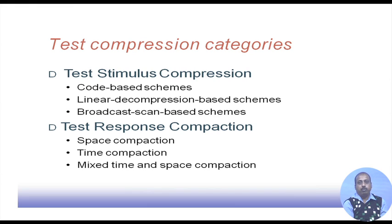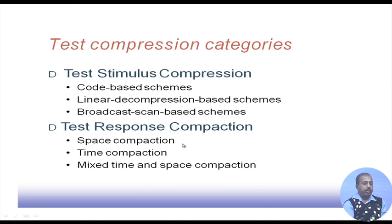Test compression can broadly be divided into two categories: stimulus compression and response compression. In stimulus compression we compress the test patterns so that we need to store less information in the ATE. In response compaction, we compact the response received from the circuit — for example, out of ten thousand patterns, instead of storing all ten thousand responses, we store only a part of them in some modified form and then do comparison against that modified response only.